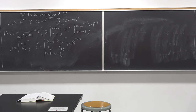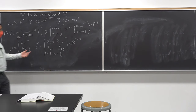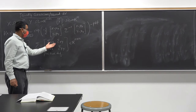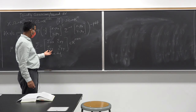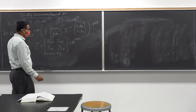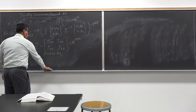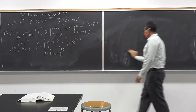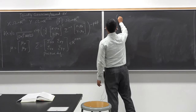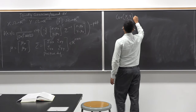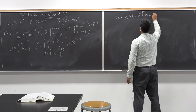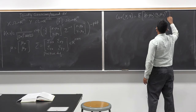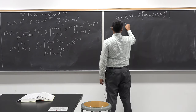This is what a jointly Gaussian or jointly normal random variable looks like. Their mean is a vector [μ_x, μ_y]. Their covariance is [Cov(x,x), Cov(x,y); Cov(y,x), Cov(y,y)]. Note that Cov(x,y) = E[(x−μ_x)(y−μ_y)^T] and Cov(y,x) = E[(y−μ_y)(x−μ_x)^T].